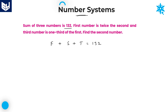First number is twice the second, and third number is one third of first. Find the second number. If you want to calculate the second number, you need to write the first and third numbers in terms of the second number. I am considering first number is f, second number is s, third number is t.